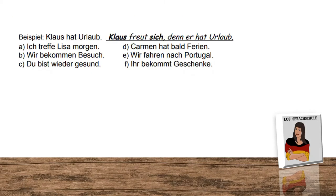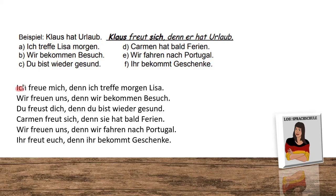Now let's do our little exercise. Press pause and try to change the beginning of the sentence. Example: 'Klaus hat Urlaub. Klaus freut sich, denn er hat Urlaub.' The 'freut sich' is a fixed combination. Answers: 'Ich freue mich, denn ich treffe morgen Lisa.' 'Wir freuen uns, denn wir bekommen Besuch.' 'Du freust dich, denn du bist wieder gesund.' 'Carmen freut sich, denn sie hat bald Ferien.' 'Wir freuen uns, denn wir fahren nach Portugal.' 'Ihr freut euch, denn ihr bekommt Geschenke.'